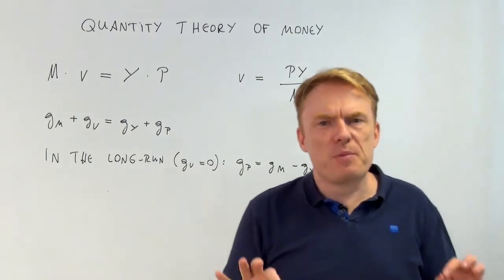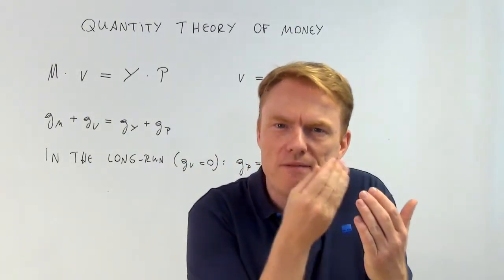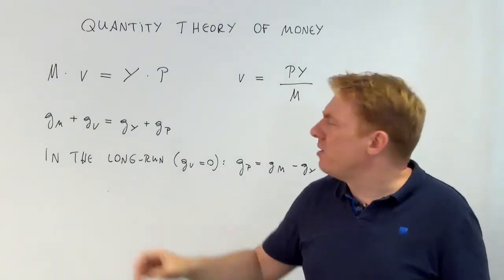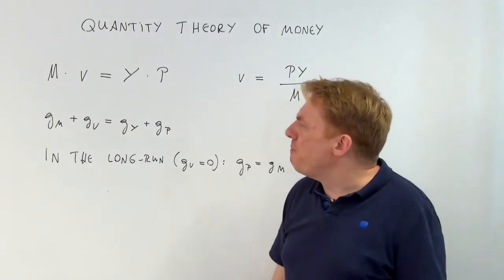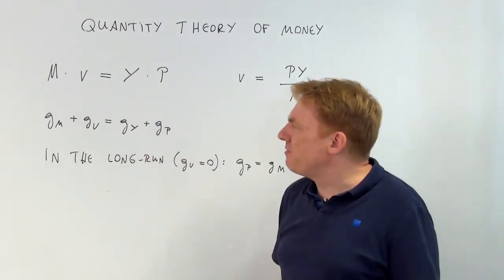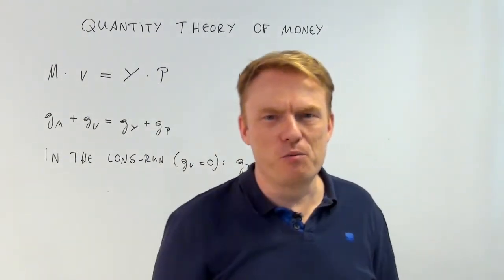5%, 5% is okay, is still okay. It is still okay to have a 5% increase in the amount of money. That's important to know, given this equation and the quantity theory of money. Thank you for watching.